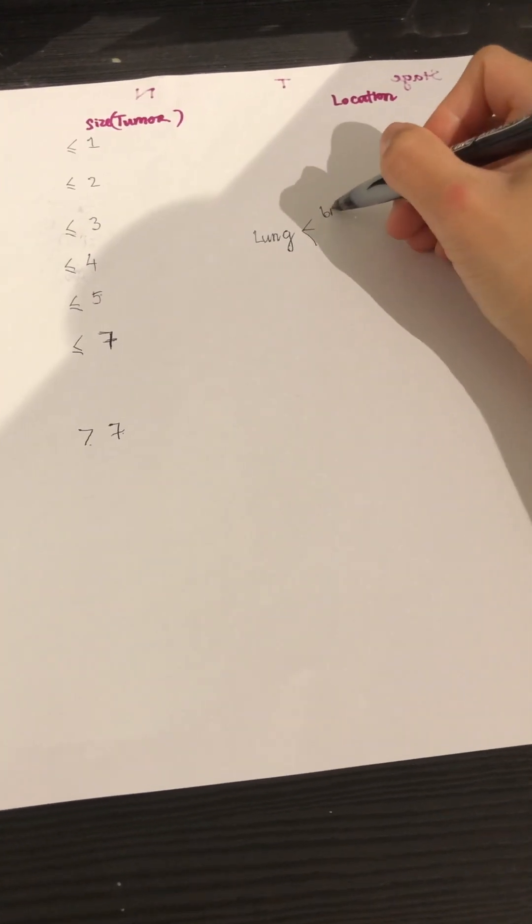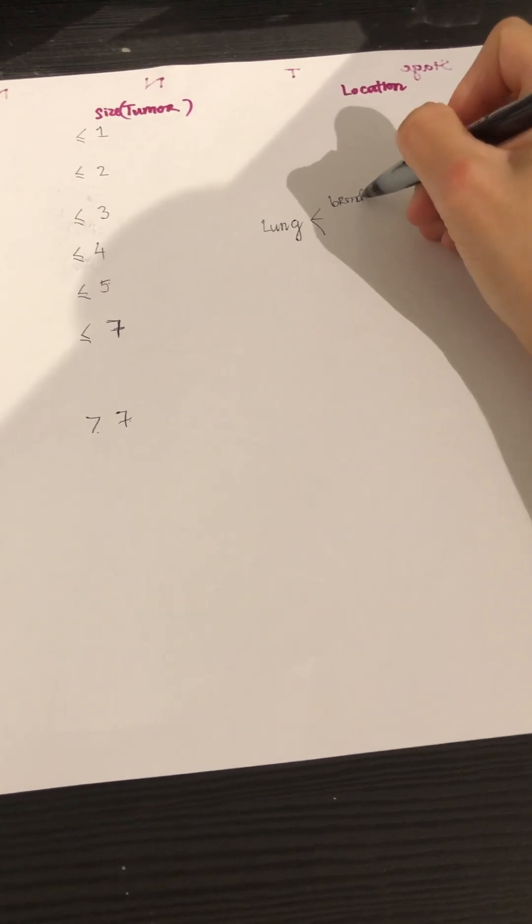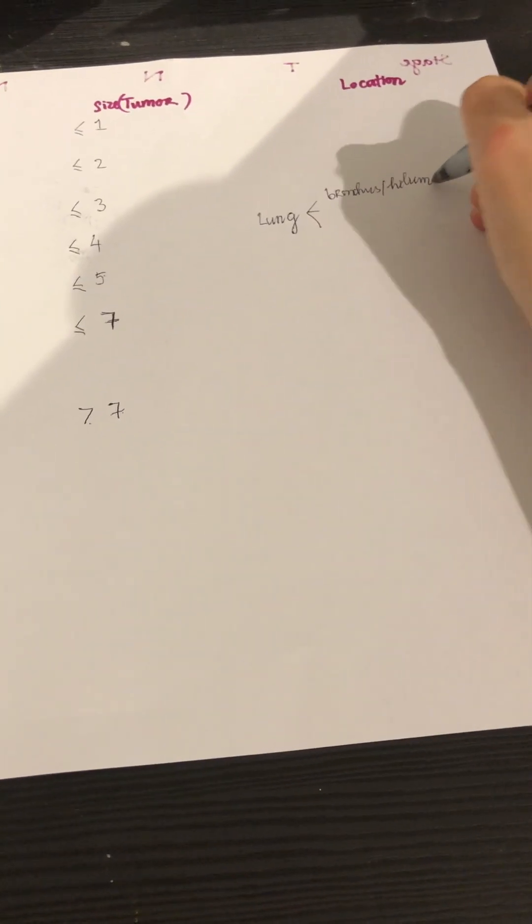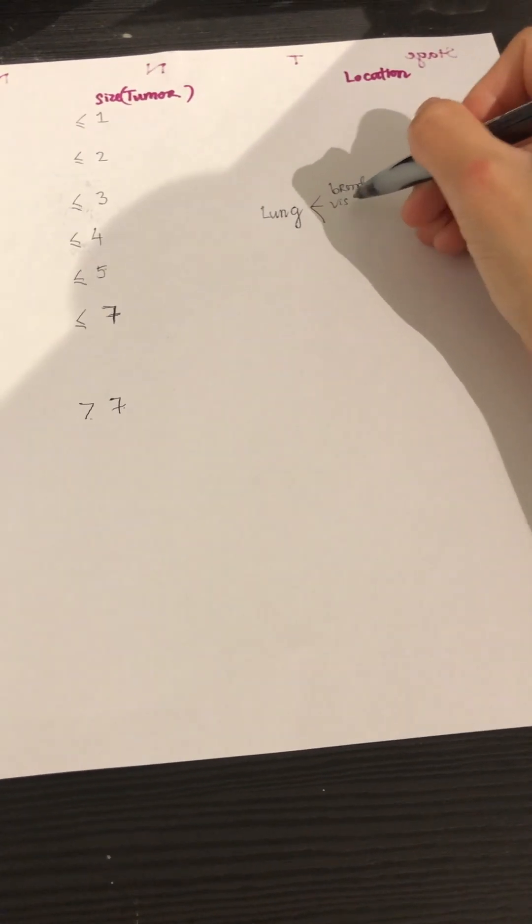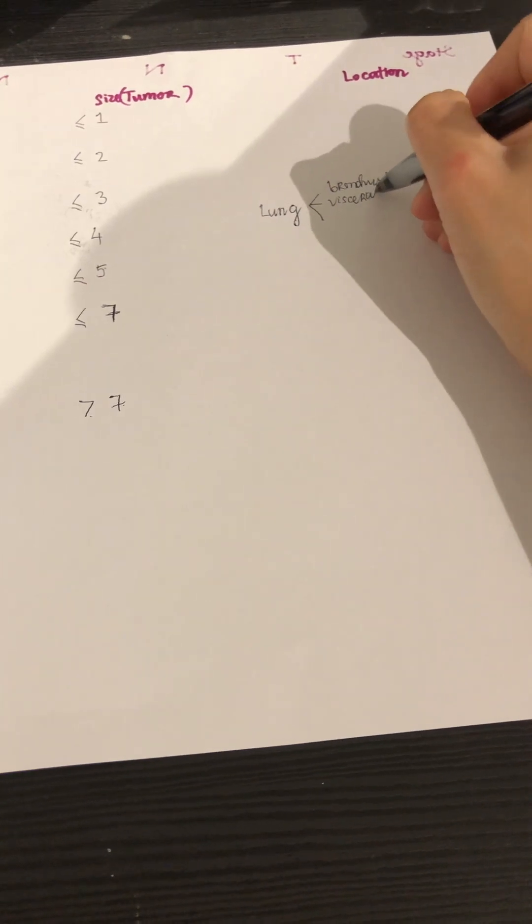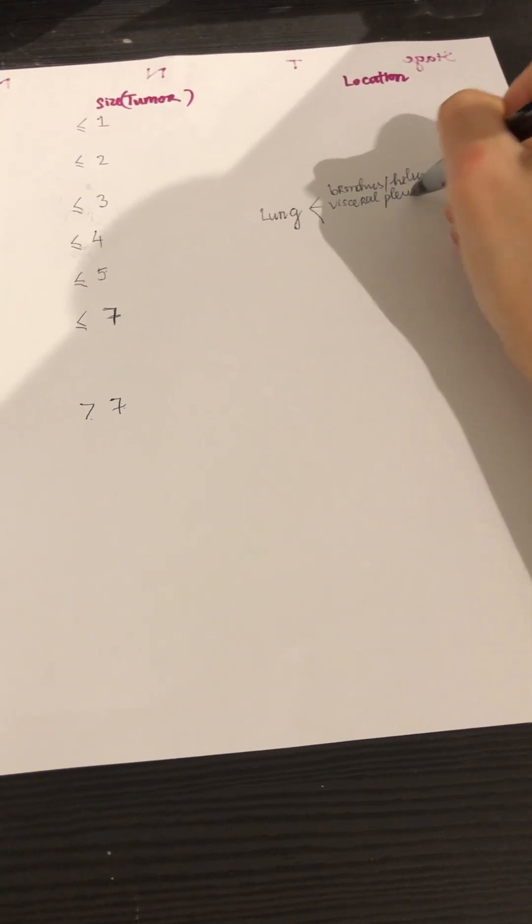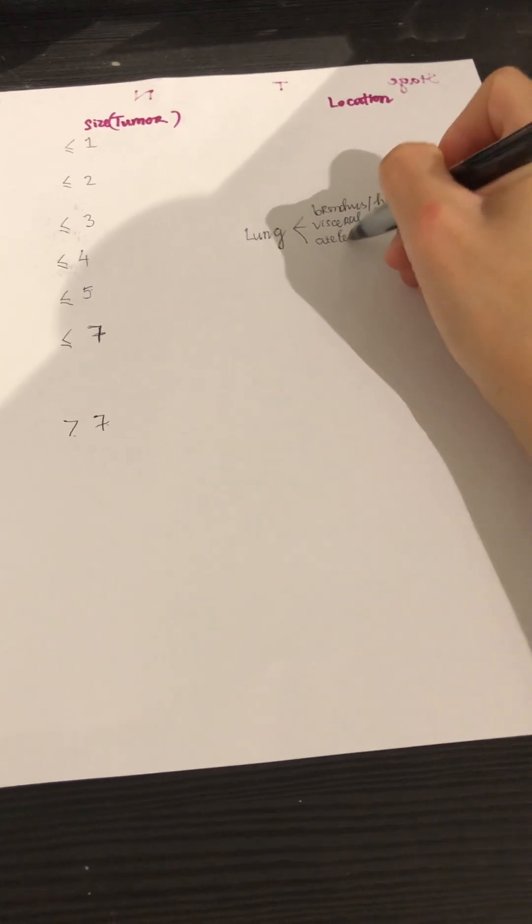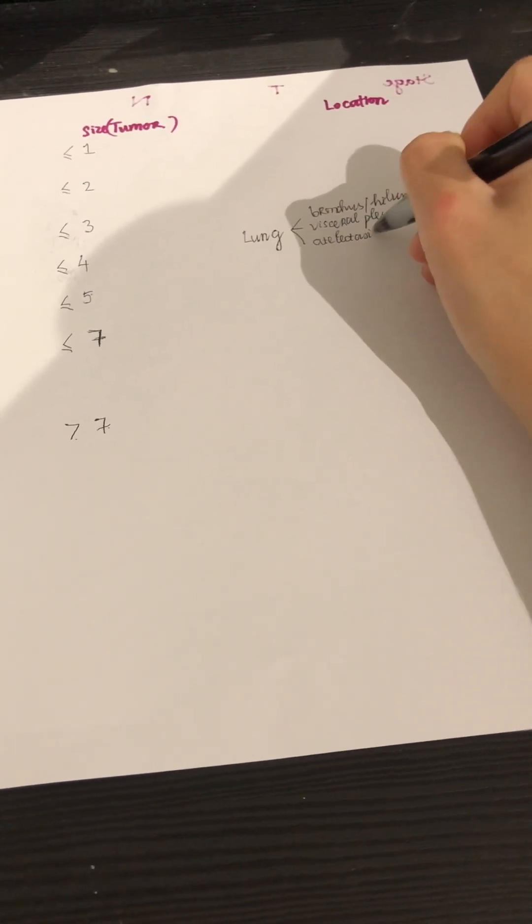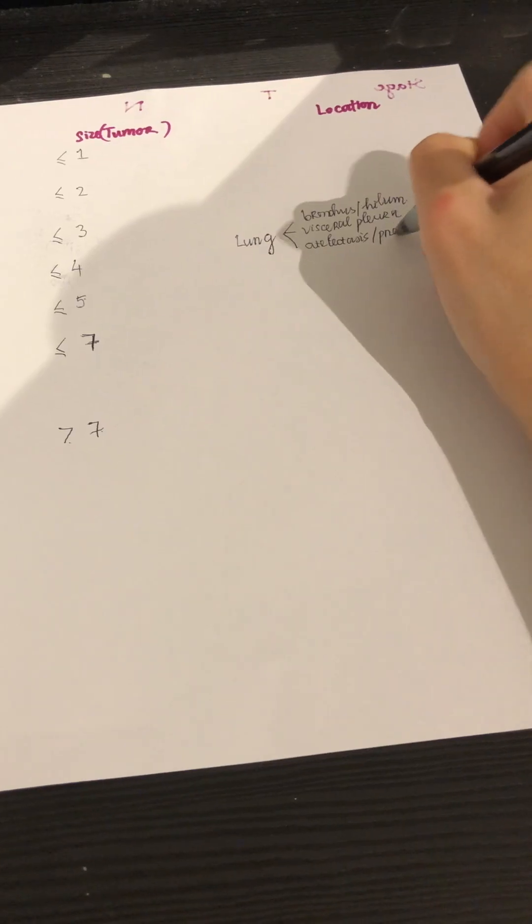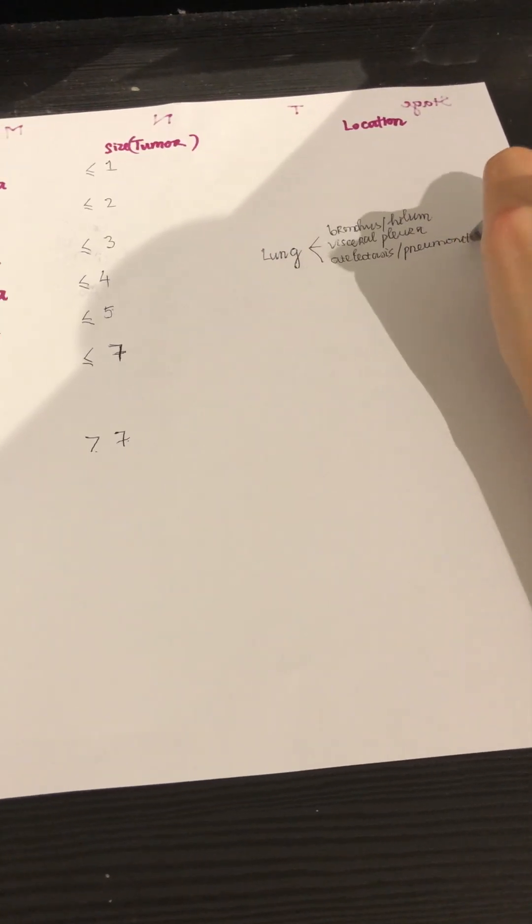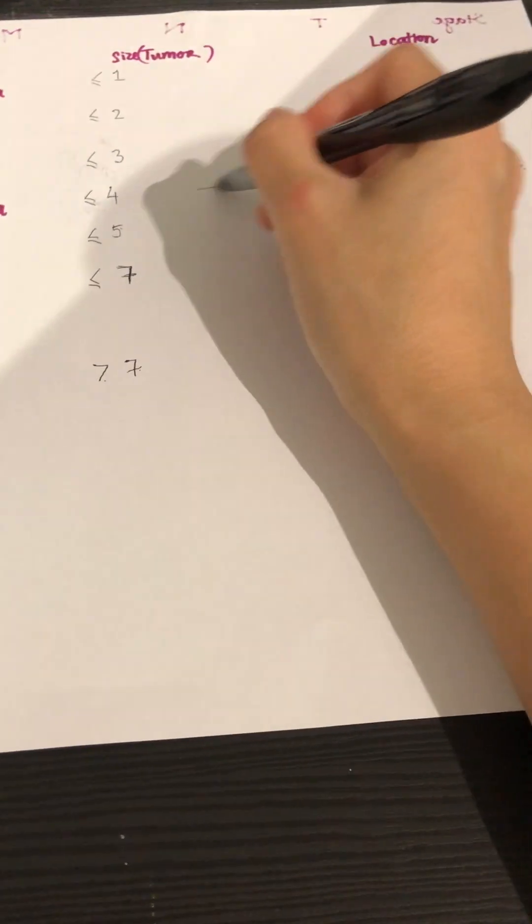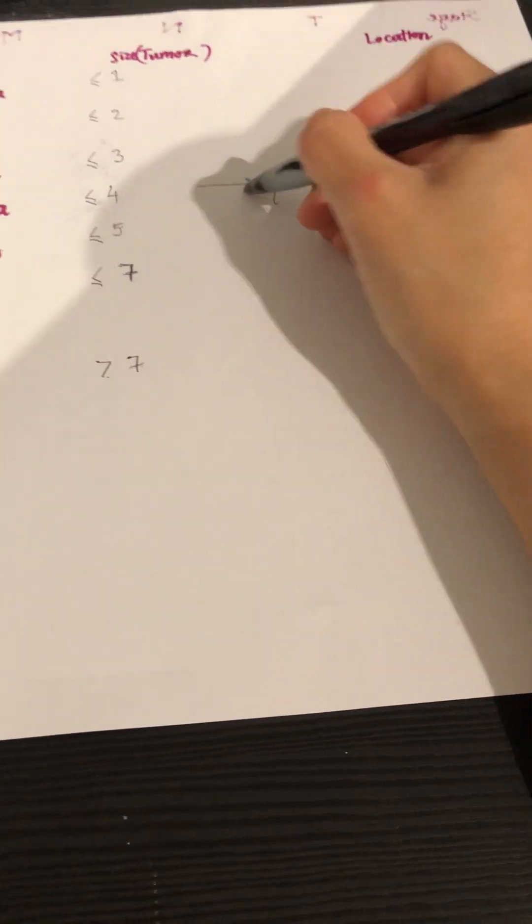Except in the lung. So it would be bronchus, hilum, T2. And anything that causes atelectasis or pneumonitis because of obstruction. So T2 would be anything just involve the lung here.